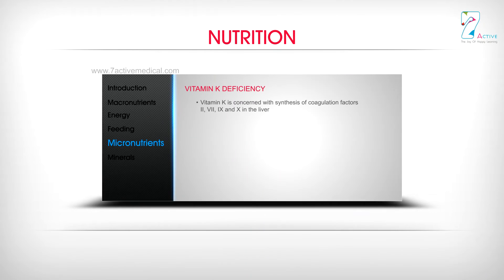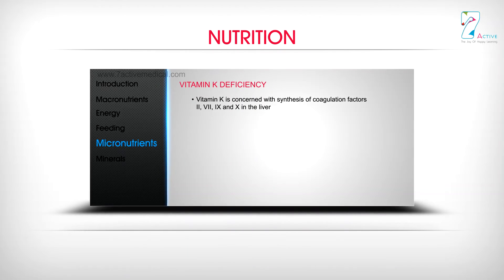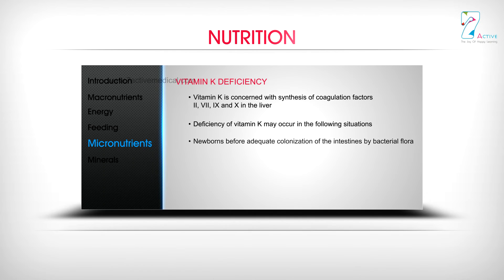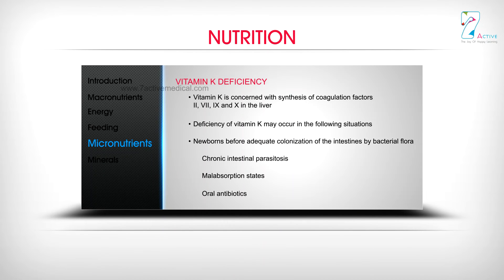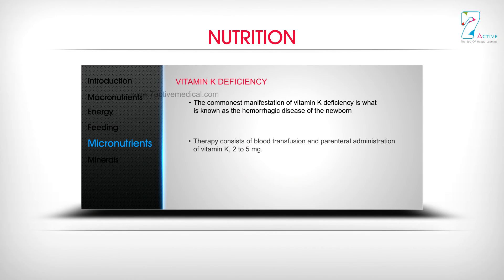Vitamin K is concerned with the synthesis of coagulation factors 2, 7, 9, and 10 in the liver. Deficiency may occur in newborns before adequate colonization of the intestines by bacterial flora, in chronic intestinal parasitosis, malabsorption states, and with oral antibiotics. The commonest manifestation is hemorrhagic disease of the newborn. Therapy consists of blood transfusion and parenteral administration of vitamin K 2 to 5 mg.